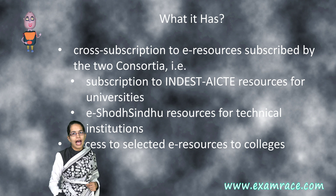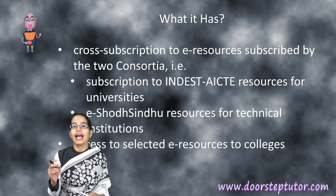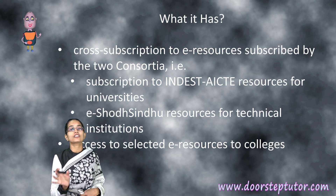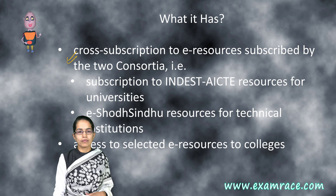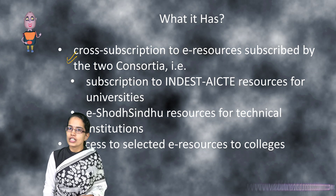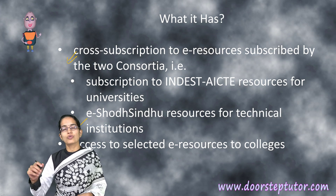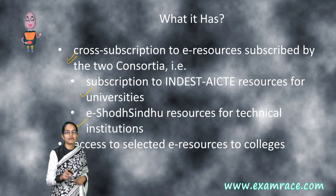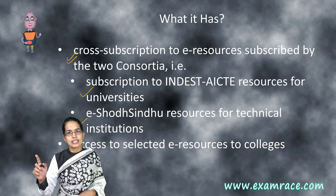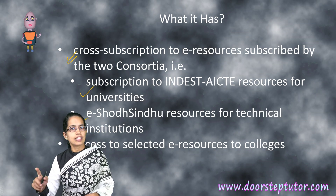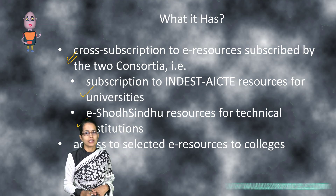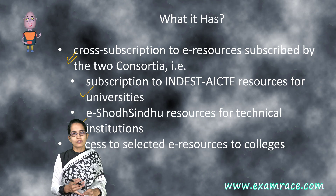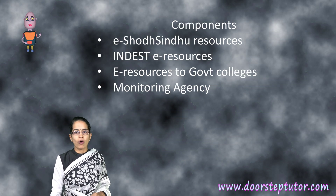NLIST provides access to e-resources for various colleges as well as cross-subscriptions. Cross-subscriptions come in two forms: one through Eshot Sindhu for technical institutions, and the other is the subscription to INDEST — the Indian National Digital Library for Engineering, Science and Technology — for various universities. It has been subscribed by two consortia which are part of it, and now it has four components.